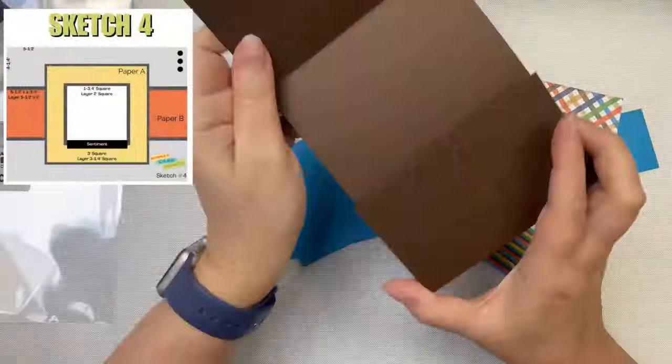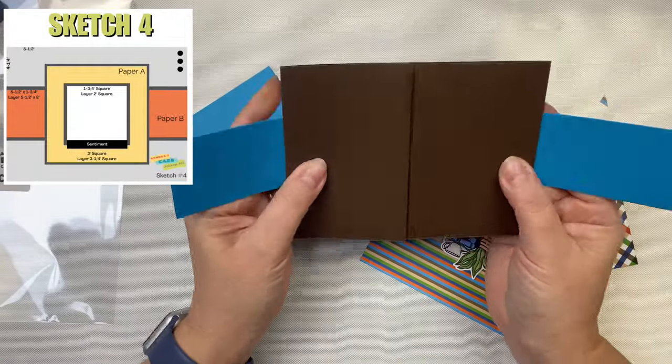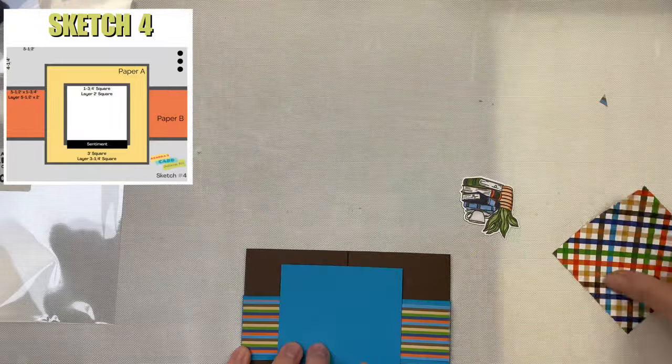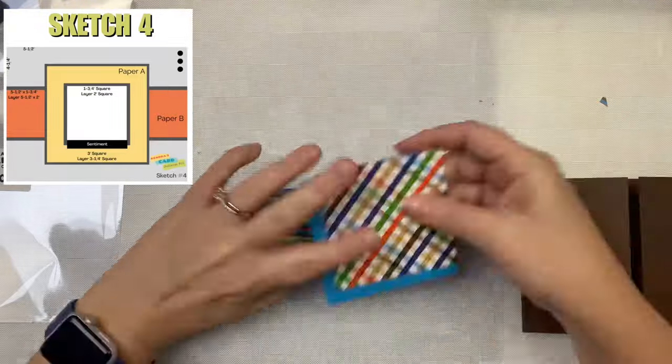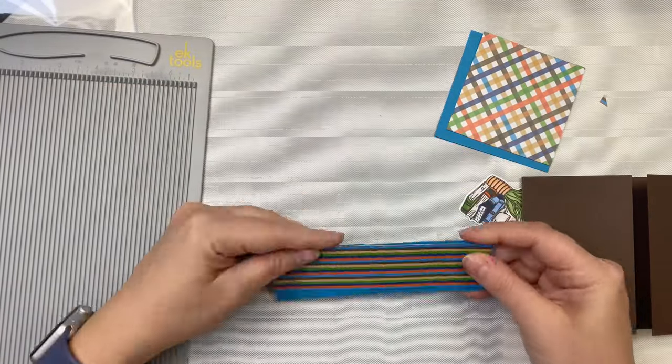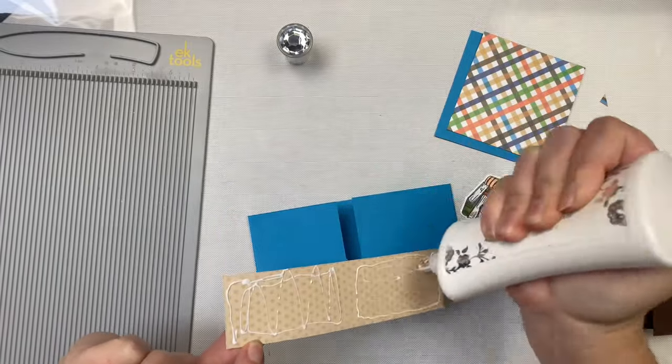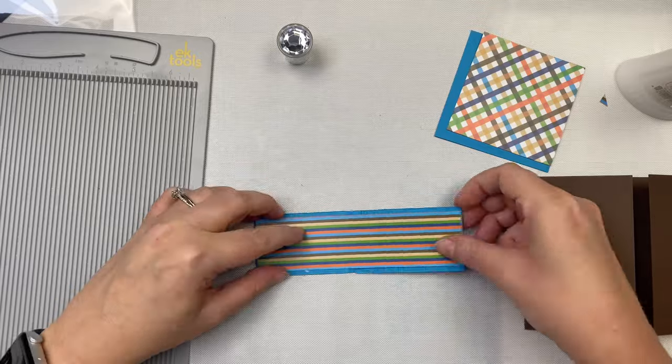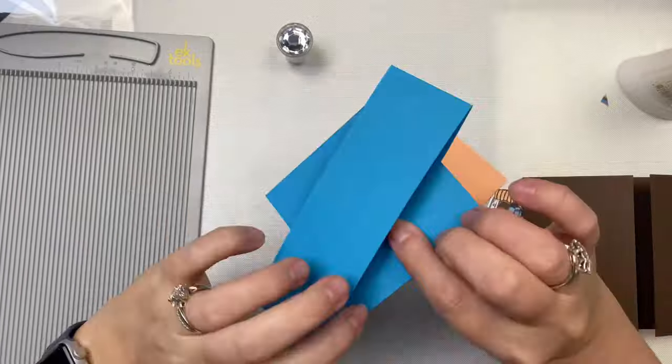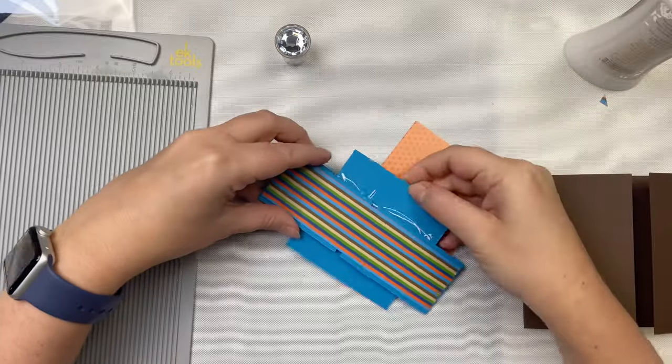For the second card, I'm sharing a landscape gatefold card with a belly band. I used the brown coffee shop card stock cut to 4 and a quarter by 11 inches, then scored at 2 and three-quarter inches from each end. This will need a white panel glued to the inside, but I'll do that later. I have a 1 and three-quarter inch strip in that middle school blue that's 11 inches in length, and I've wrapped it around the long end of the card for the belly band.